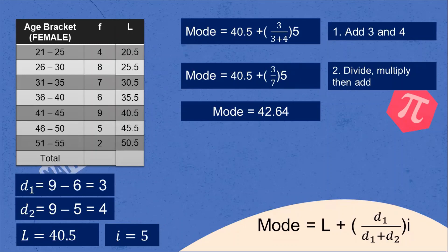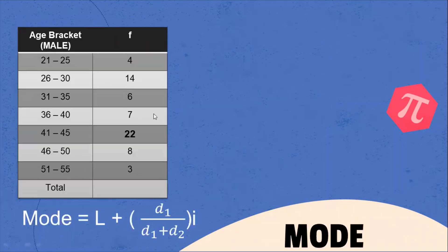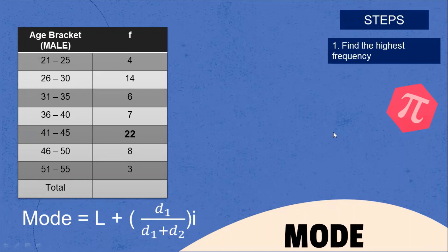Let's have another example. Given an age bracket for males and their frequencies. First step: find the highest frequency. The highest frequency for the male respondents is 22.